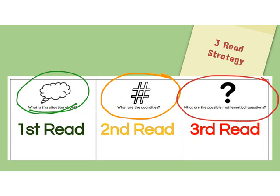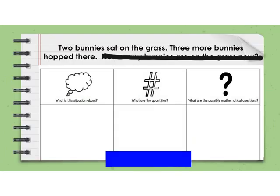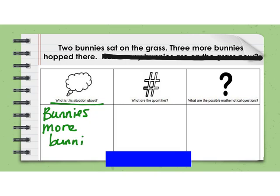Let's look at the first word problem. It says: two bunnies sat on the grass, three more bunnies hopped there. On my first read, I'm thinking about what the situation is about. Well, the situation is about bunnies — they're sitting on the grass and more bunnies join them.